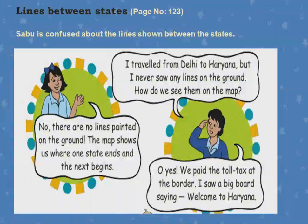Lines between states, page number 123. Sabu is confused about the lines shown between states. He says: 'I travelled from Delhi to Haryana but I never saw any lines on the ground — how do you see them on the map?' He is asking why Delhi and Haryana appear separated on the map when no visible lines exist on the ground. The states are separated by imaginary lines.